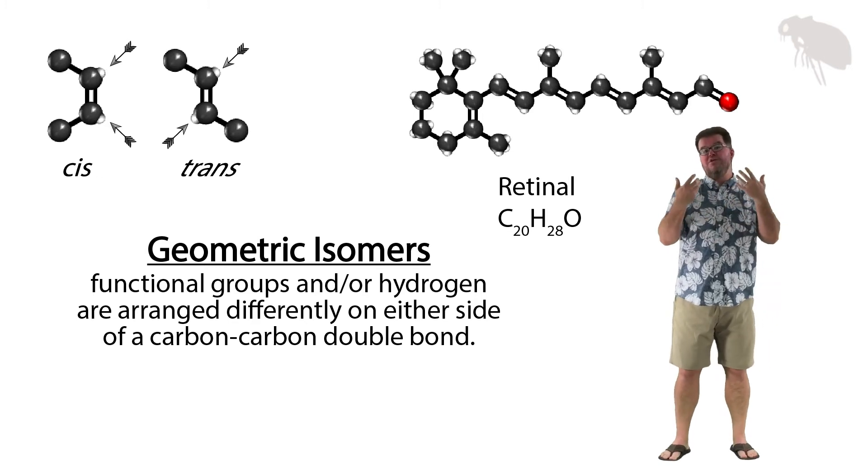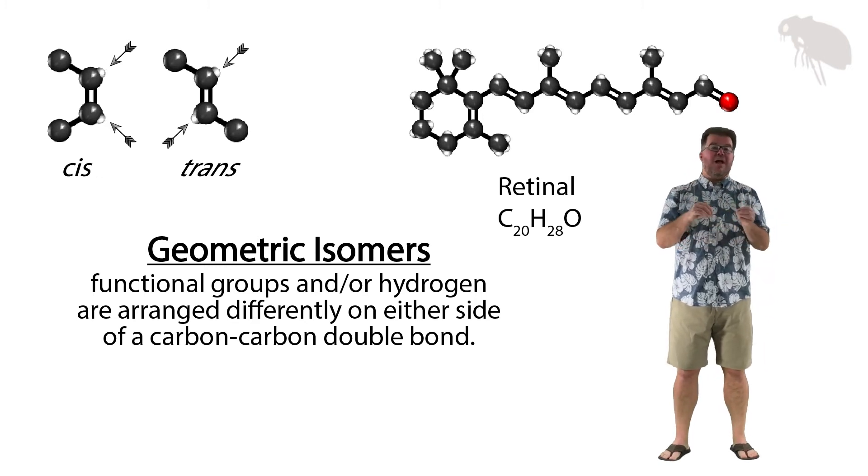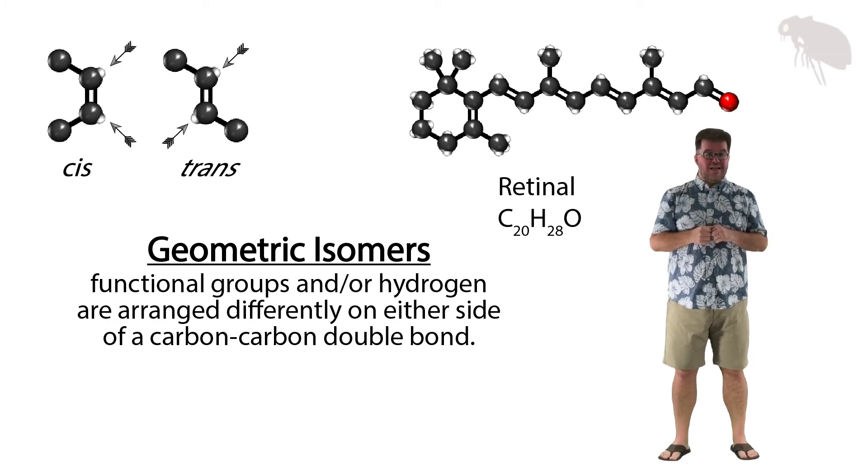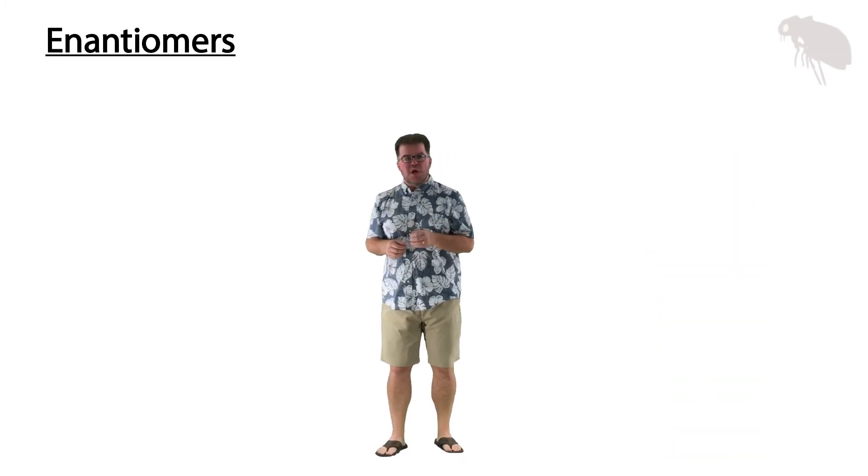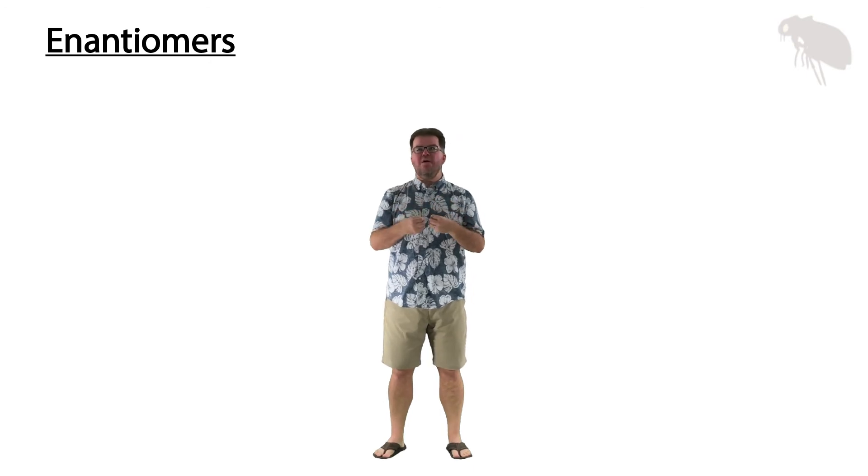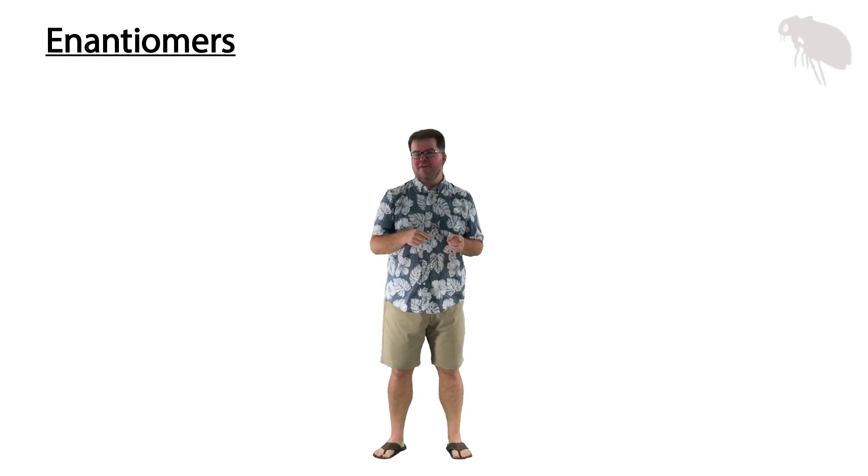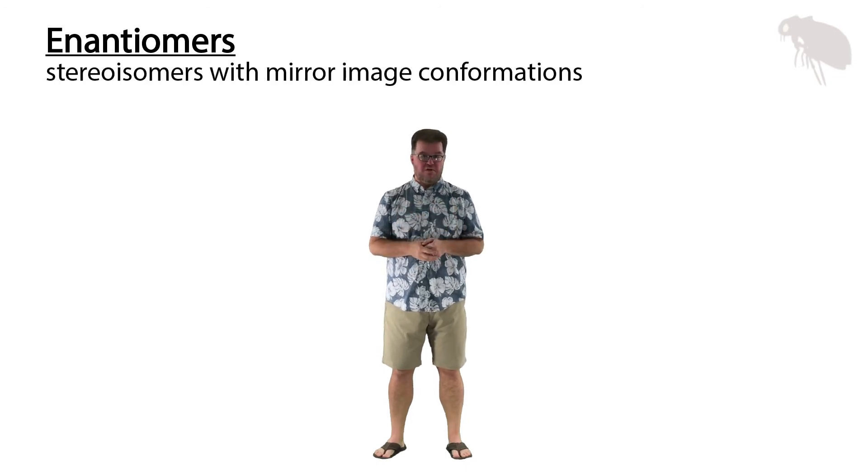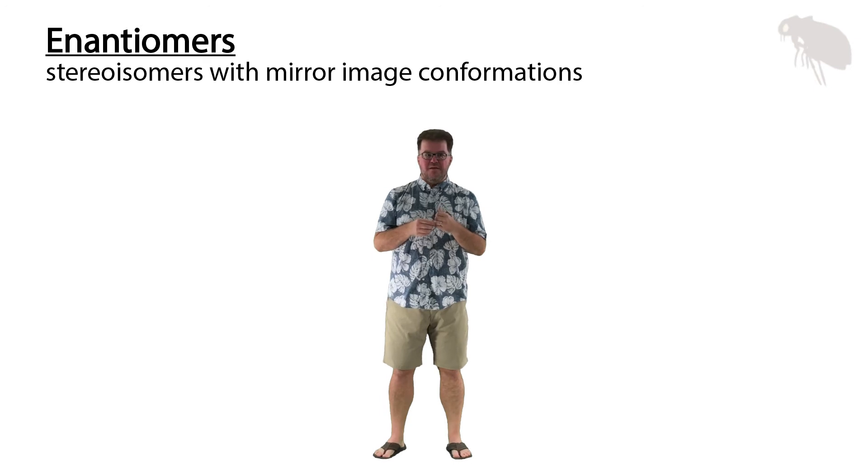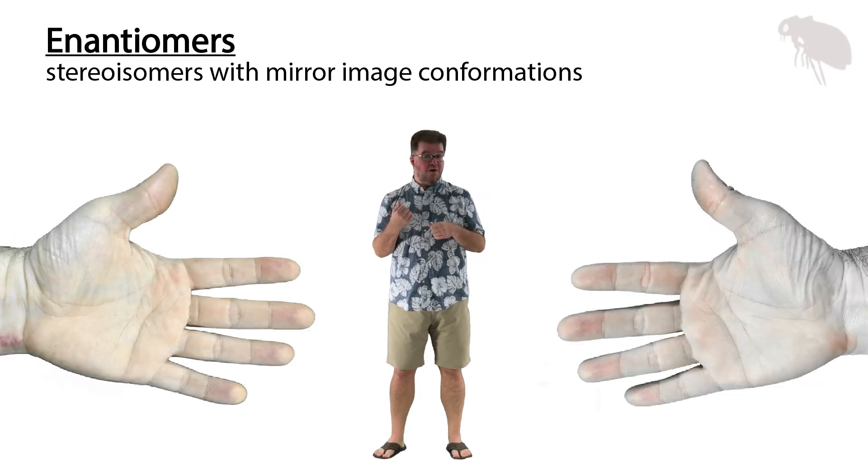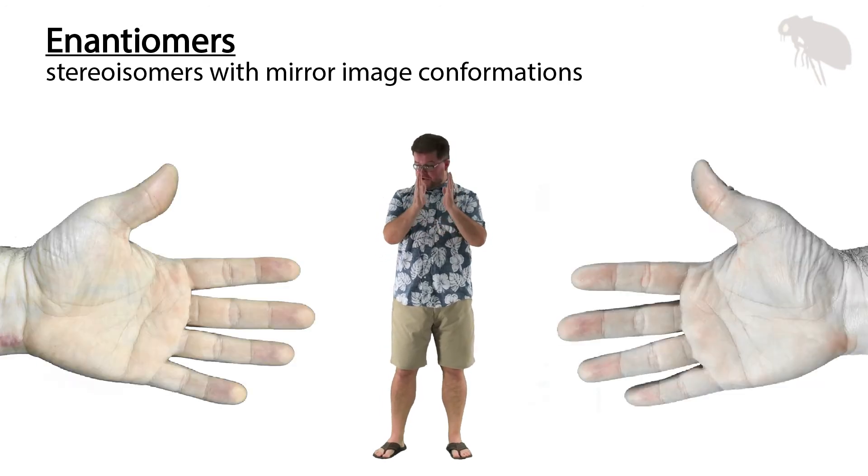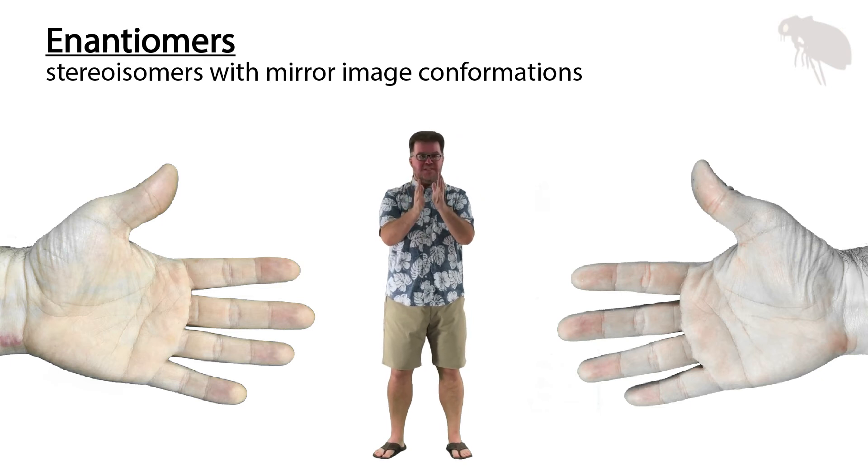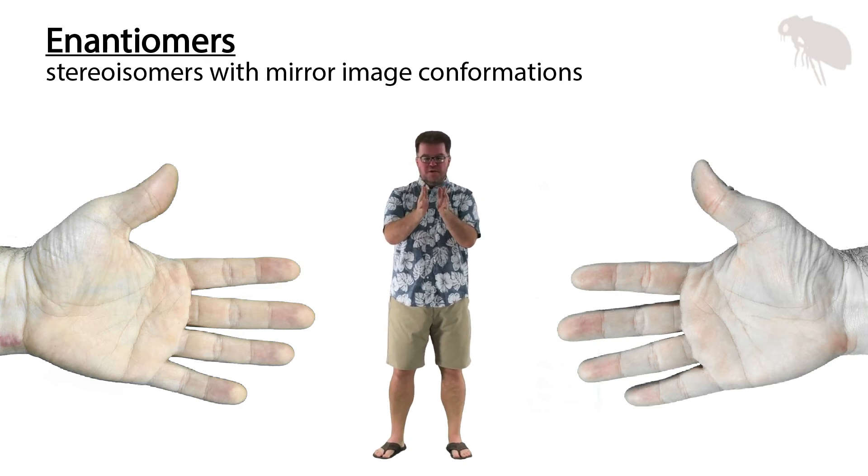Now let's end by looking at enantiomers. Enantiomers are molecules where the two molecules have essentially the same superficial bond arrangements, but they're actually mirror images of each other. Mirror images kind of like the left hand and the right hand are mirror images of each other. These structures are mirror images. They have all the same parts in the same basic arrangement.